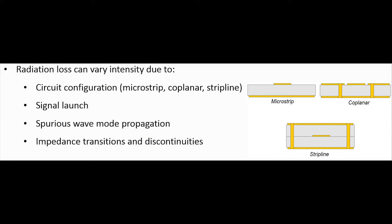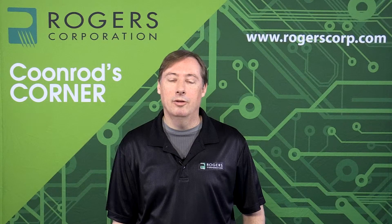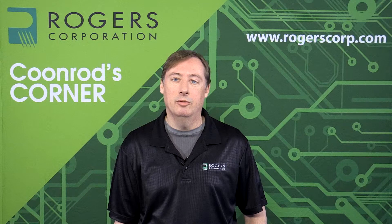Radiation losses and the intensity of radiation losses are also attributed to different circuit configurations. Microstrip, coplanar, and stripline configurations all have different concerns for radiation loss. There are also concerns with the type of structure — whether it could be a filter structure, a coupler structure, or a transmission line. Signal launch also plays a role in the differences for radiation losses, and spurious modes can be an issue as well.